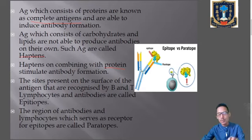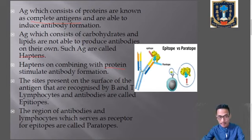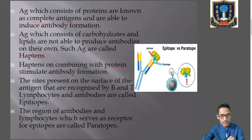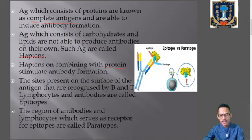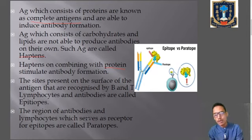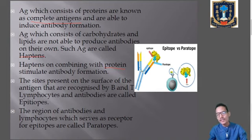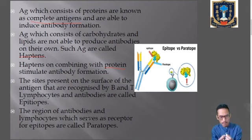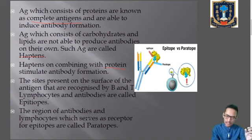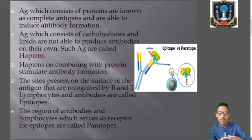Important terms to remember are antigenicity, complete antigens, and haptens. Now, the next important terms are epitopes and paratopes. When an antigen enters the body, the body produces antibody which works against the antigen — meaning the antigen must combine with the antibody and the antibody must combine with the antigen. So there must be specific binding points on both structures for them to bind with one another.